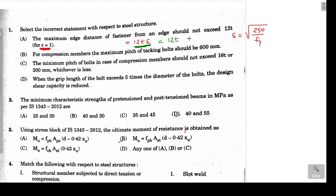Statement B says that for compression members using tack bolts, the maximum pitch allowed is 600 mm. As per the code clause, the maximum pitch for compression members with tack bolts can be kept as 600 mm — this statement is also correct.